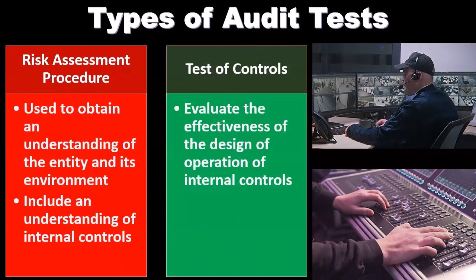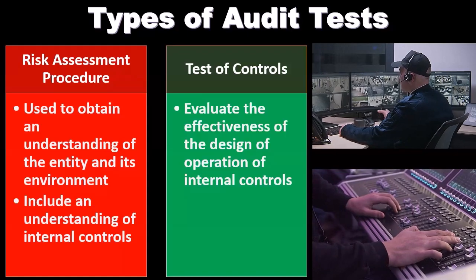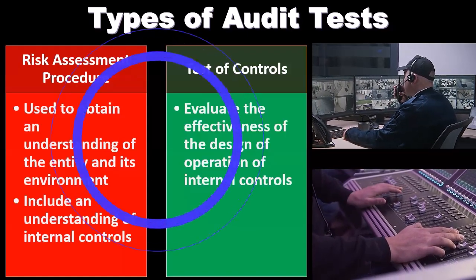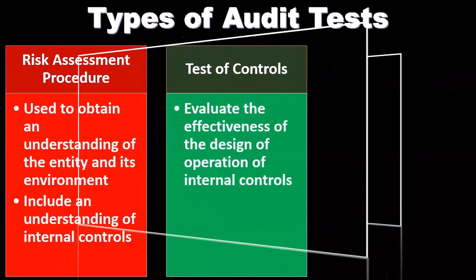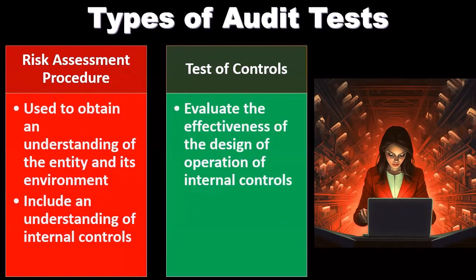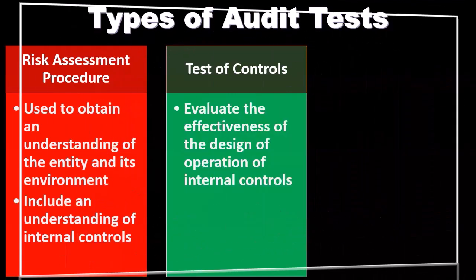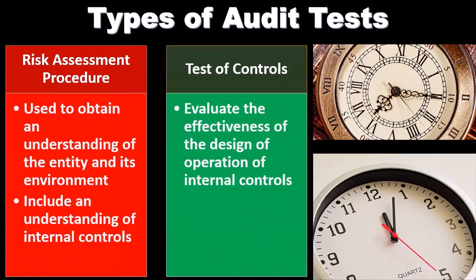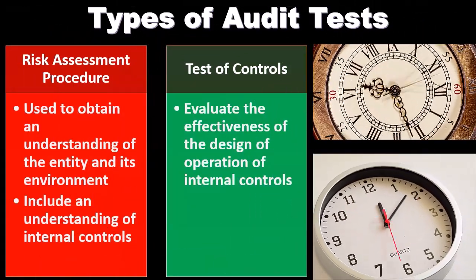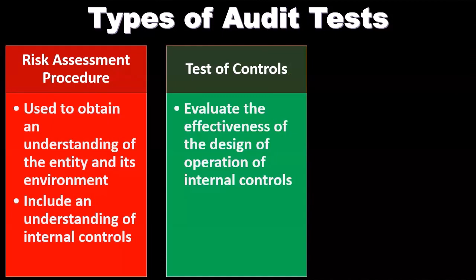The test of controls evaluates the effectiveness of the design and operation of internal controls. This is a really big process when we talk about large companies — internal controls are something that we have to rely on, and therefore we will be testing the controls directly. Testing the controls allows us to rely on them if they are strong, which allows us to do less substantive testing, saving us time.